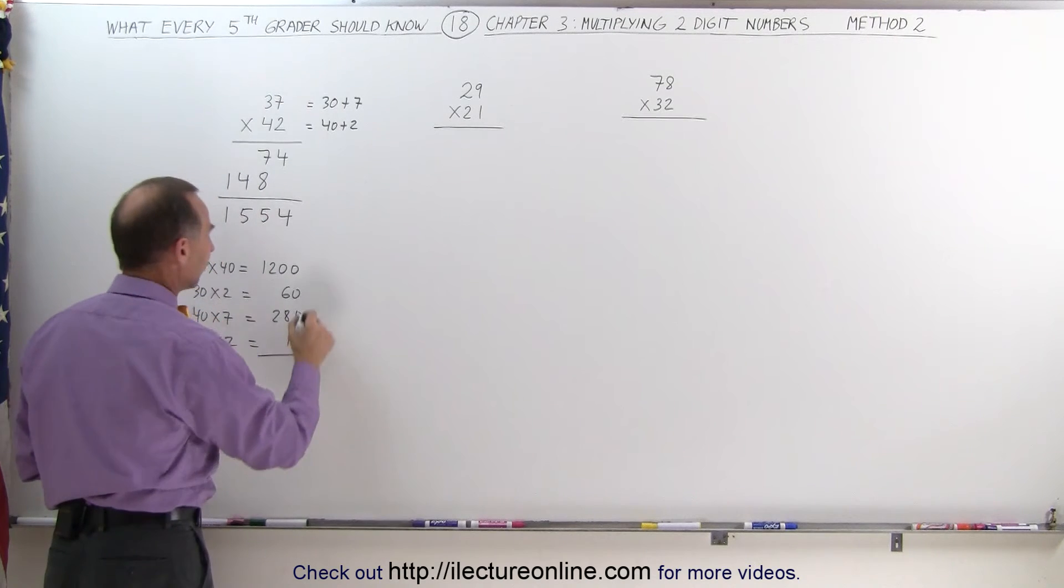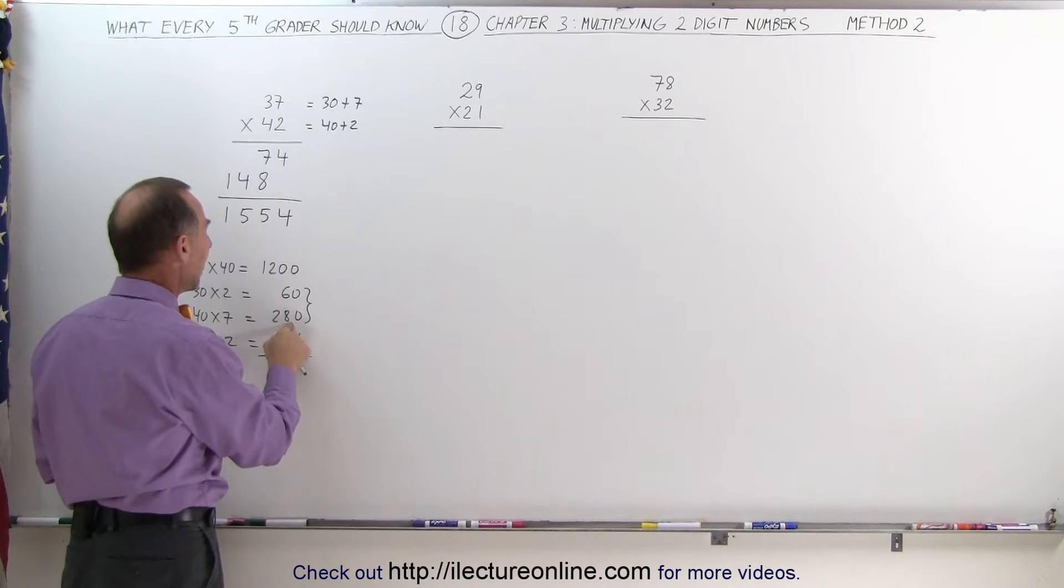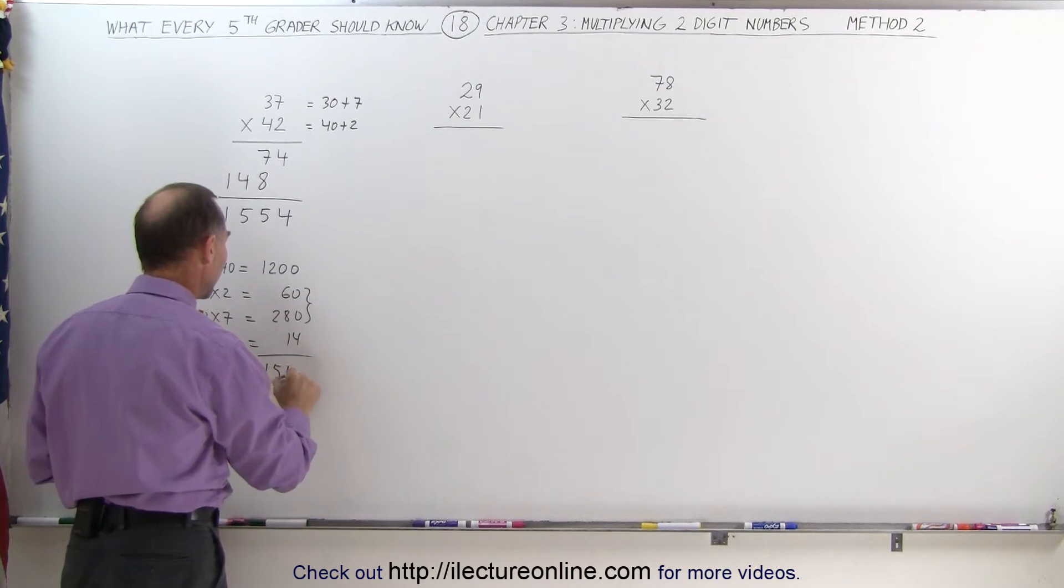And then I add all that together. First I add these two together, that gives me 340. Add that to 1200, that gives me 1540. Add 14, that gives me 1554.